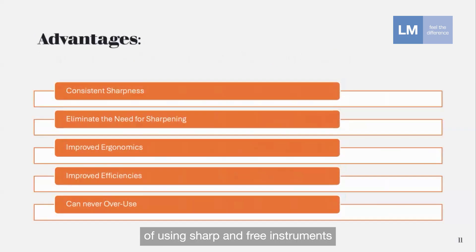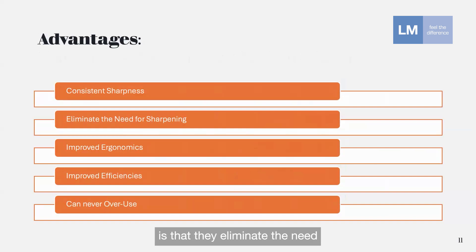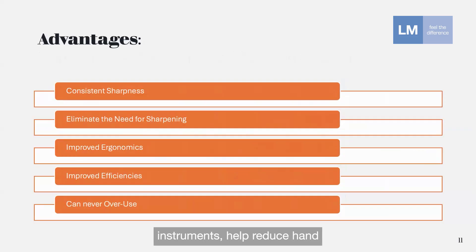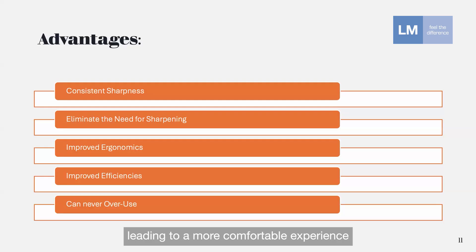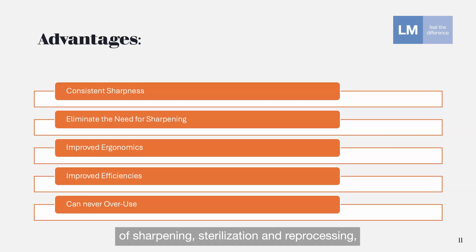The advantages of sharpen-free instruments include consistent sharpness — these instruments maintain their edge throughout their lifespan, eliminating the variability that often occurs with manually sharpened tools. They eliminate the need for sharpening altogether, meaning no more time-consuming sharpening sessions, no extra cost for sharpening tools, and no concerns about maintaining correct angulation. With improved ergonomics, sharpen-free instruments help reduce hand fatigue and wrist strain, as a consistently sharp edge means less pressure during instrumentation. They also contribute to improved efficiency and clinical workflow, allowing more time focused on patient care rather than instrument maintenance.